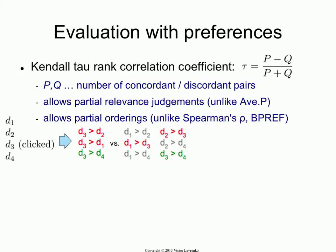So this is the set of preferences the system has implicitly, and this is the set of preferences implied by the user's click. What you can look at is the overlap and differences between the two sets of preferences. D3 and D4 are concordant — D3 was preferred to D4 by the user, and also by the system, so that pair is the same in both sets. But some pairs are different: the system thought D1 was better than D3, but the user thinks D3 is better than D1. That is a discordant pair — where the system thinks one thing and the user thinks another.